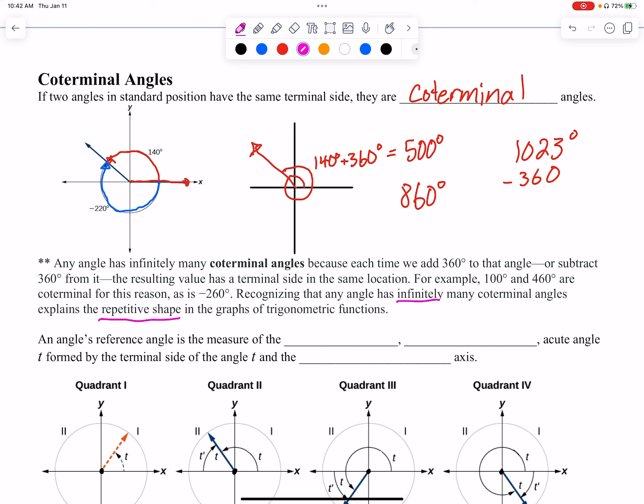Okay, so an angle's reference angle—it's weird, but that's correct—angle's reference angle is the measure of the smallest positive acute angle T formed by the terminal side of the angle T and the horizontal. I'll show you what that means with the pictures right here below.